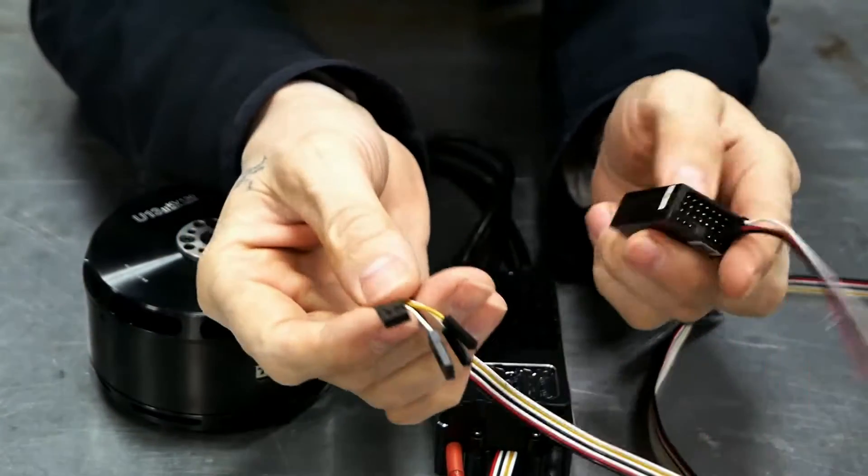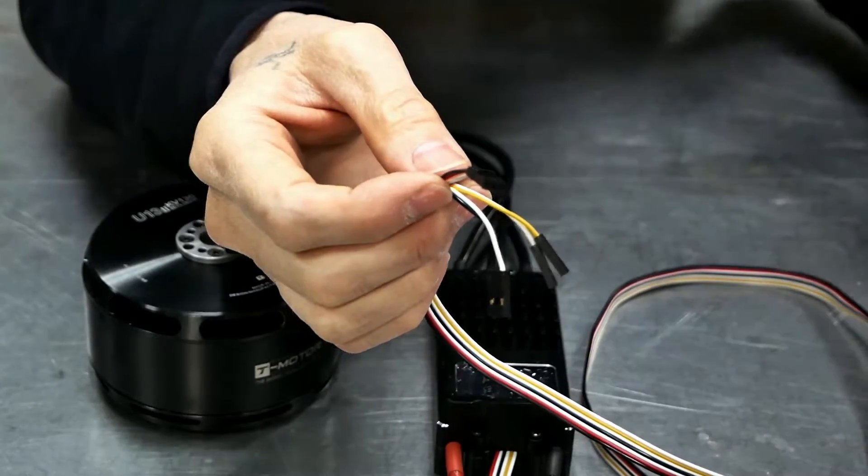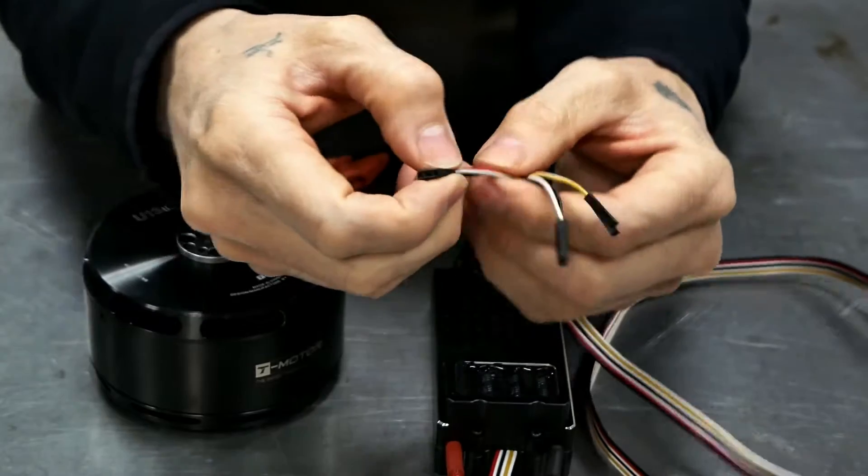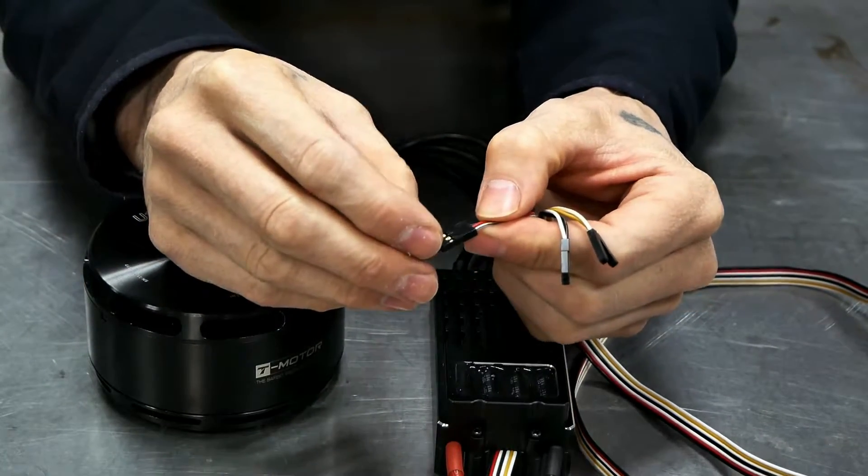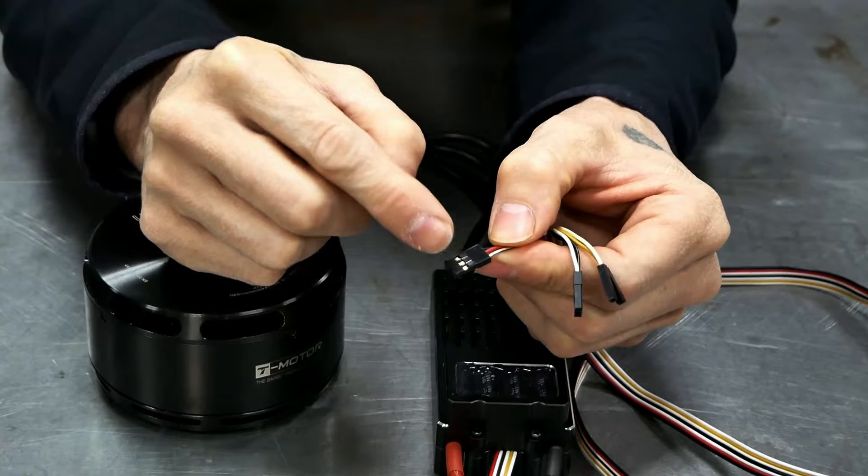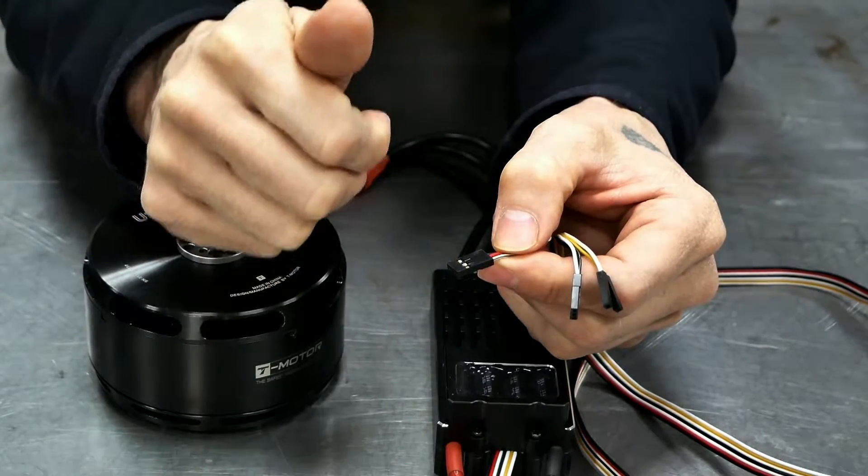If it was that easy, we'd be done now and maybe I wouldn't even be doing this video. Of course that does not work. You start probing this out and you find that the power, it is actually power and ground, and the power is putting out five volts, just as you would imagine. So that's good.